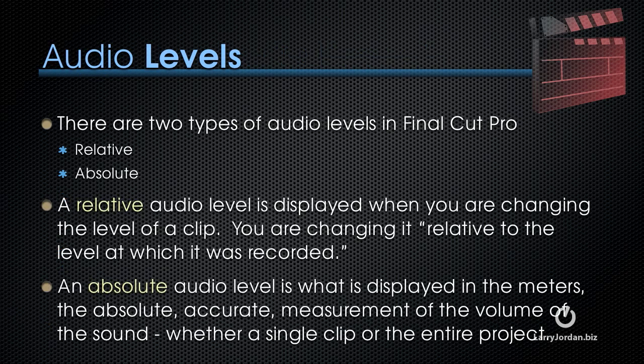There are two types of audio levels in Final Cut: relative and absolute. A relative audio level is displayed when you're changing the level of a clip — you're changing the level relative to the level at which it was recorded. An absolute audio level is what is displayed in the audio meters: the absolute, accurate measurement of the specific volume of the sound, whether for a single clip or a mix of the entire project.